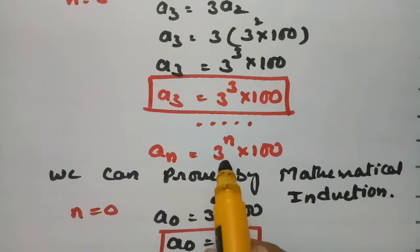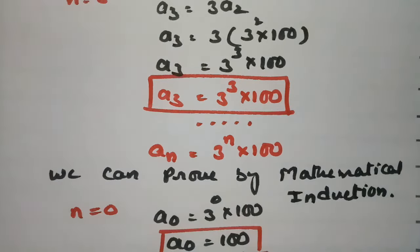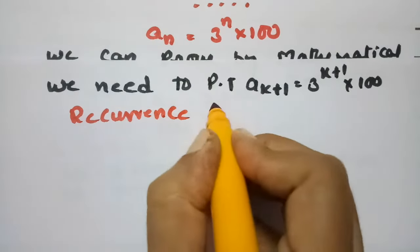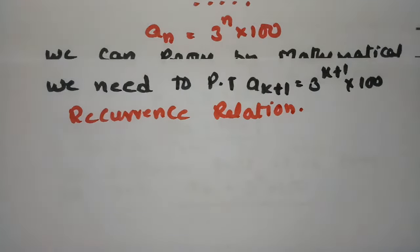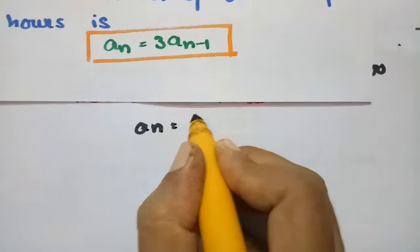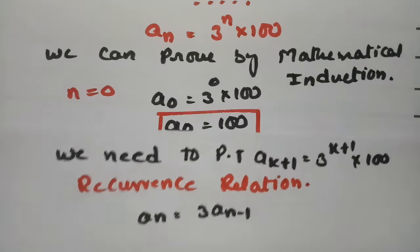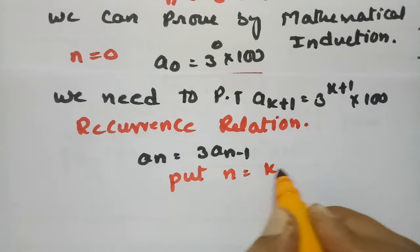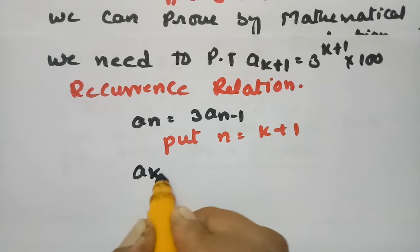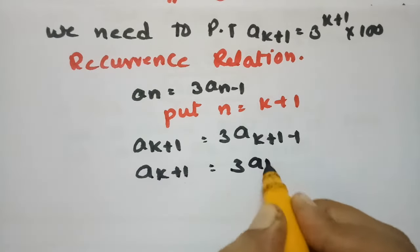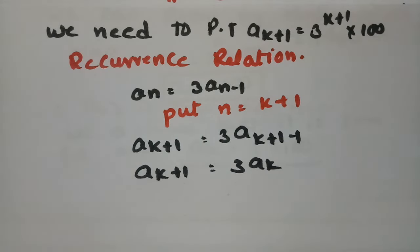To prove this, we use the recurrence relation. In the recurrence relation An equals 3 times of An minus 1, put n equal to k plus 1. Then AK plus 1 equals 3 times of A at k plus 1 minus 1, which simplifies to AK plus 1 equals 3 times of AK.